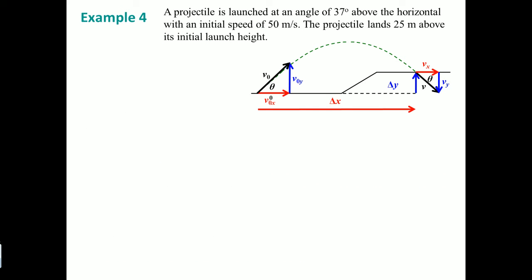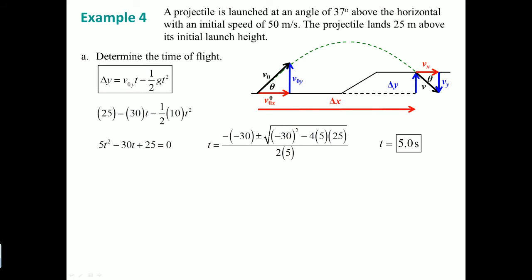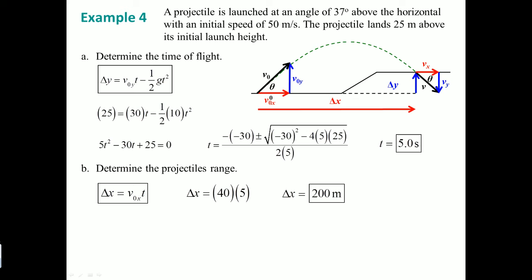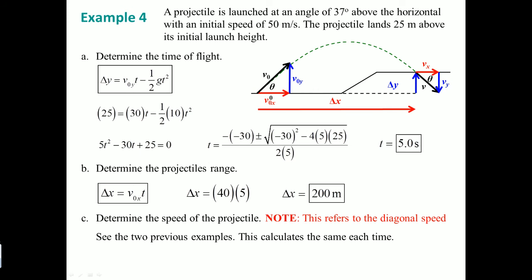Here, the object lands 25 meters above its initial height, so the math is slightly different for Delta Y. However, Delta X remains the same. Since the angle and initial speed are unchanged, the time is still 5 seconds — the same calculation confirms this. Even if the object lands above its starting height, the horizontal range does not change.